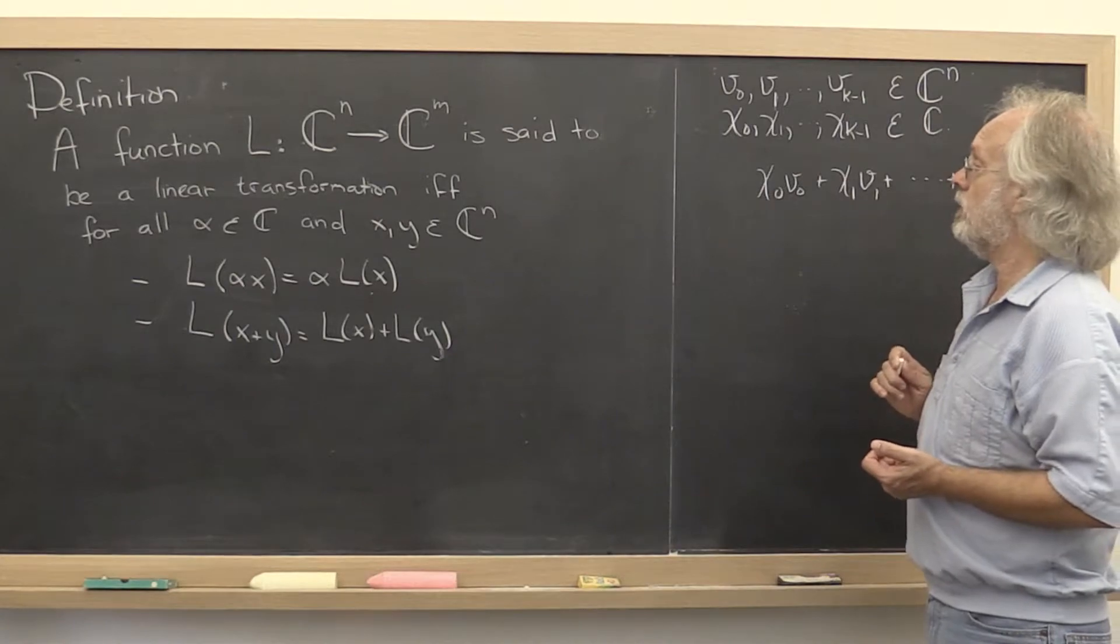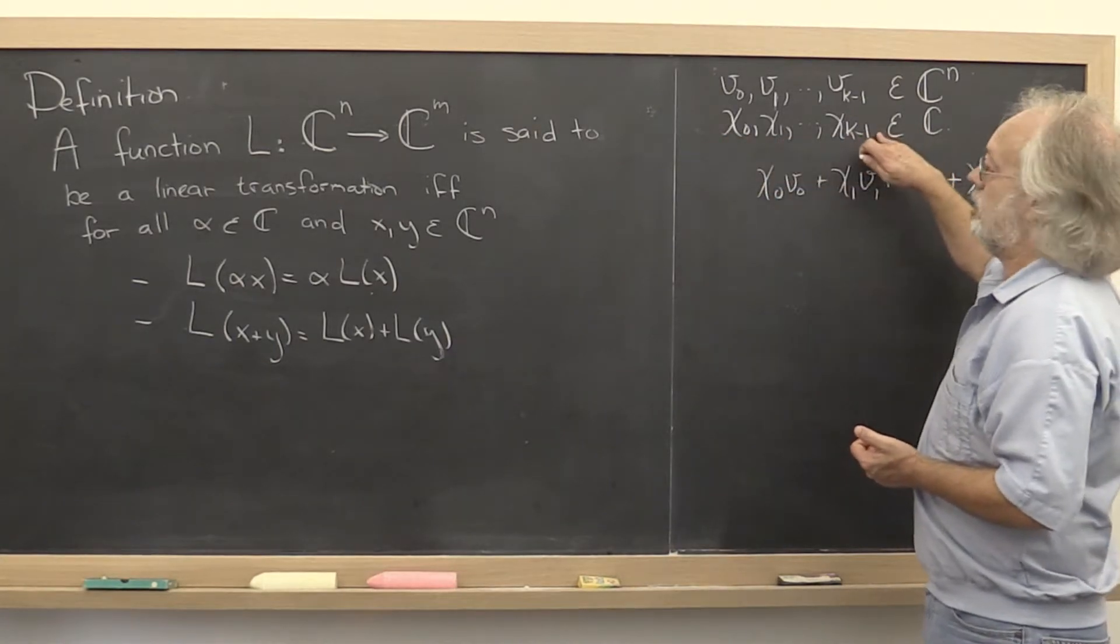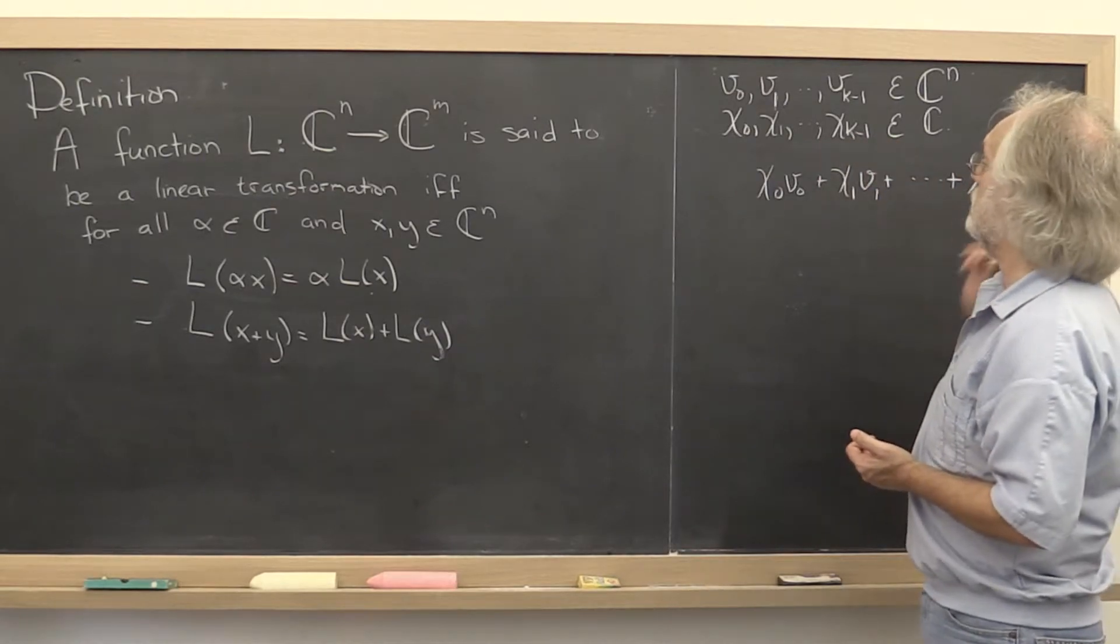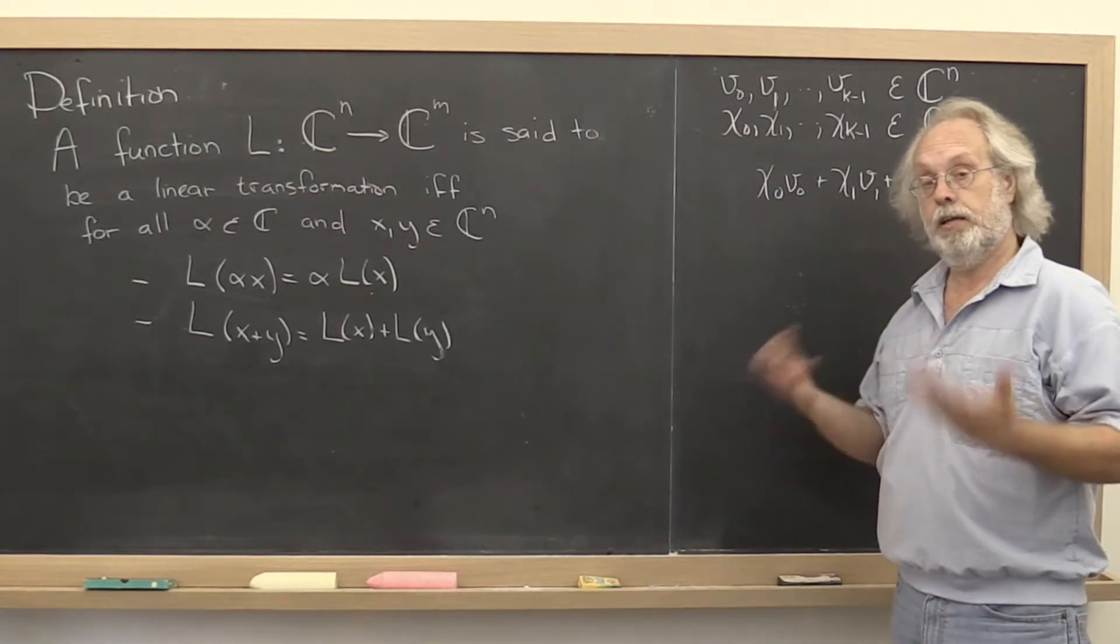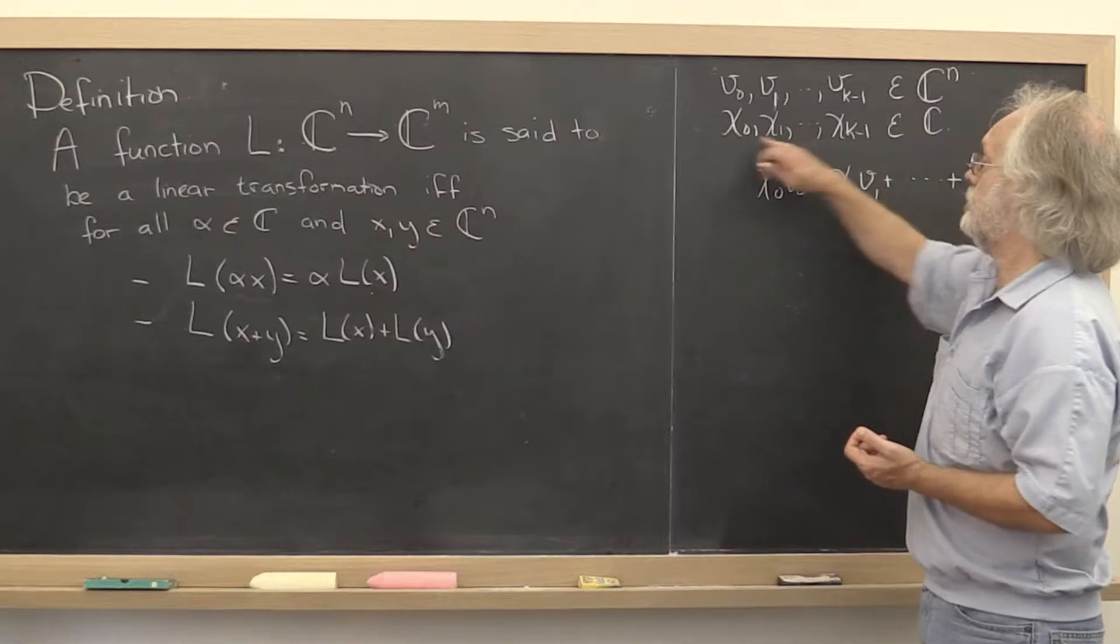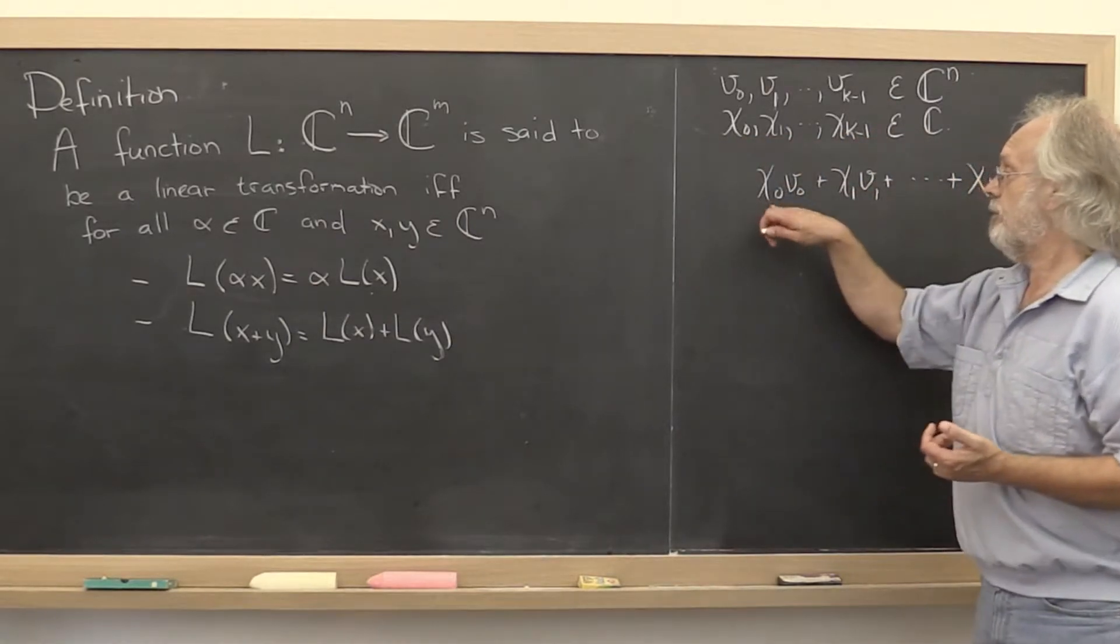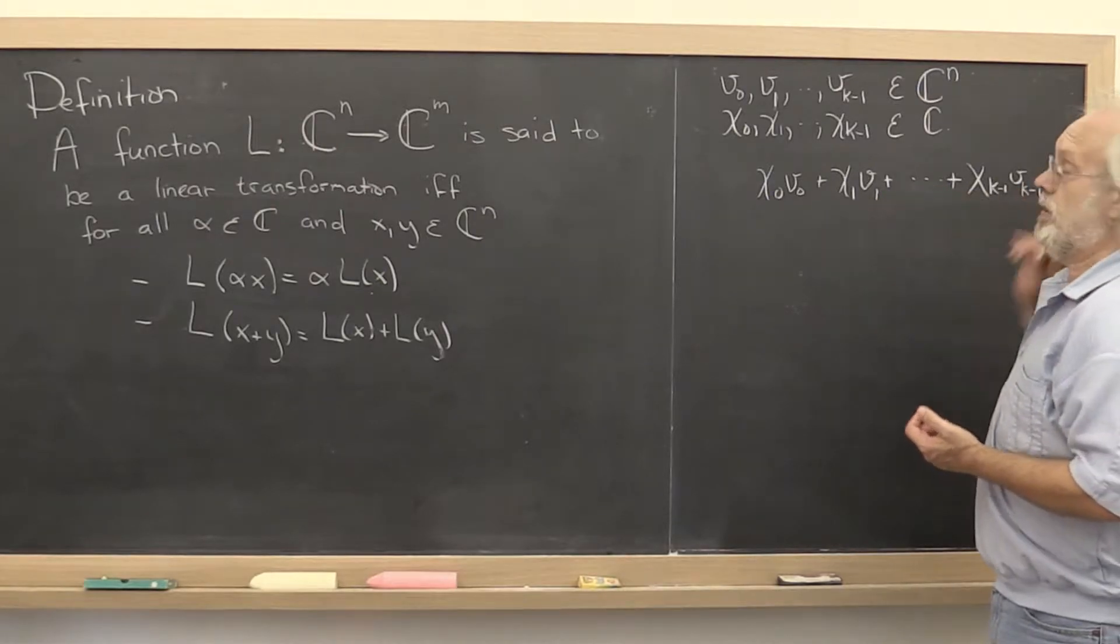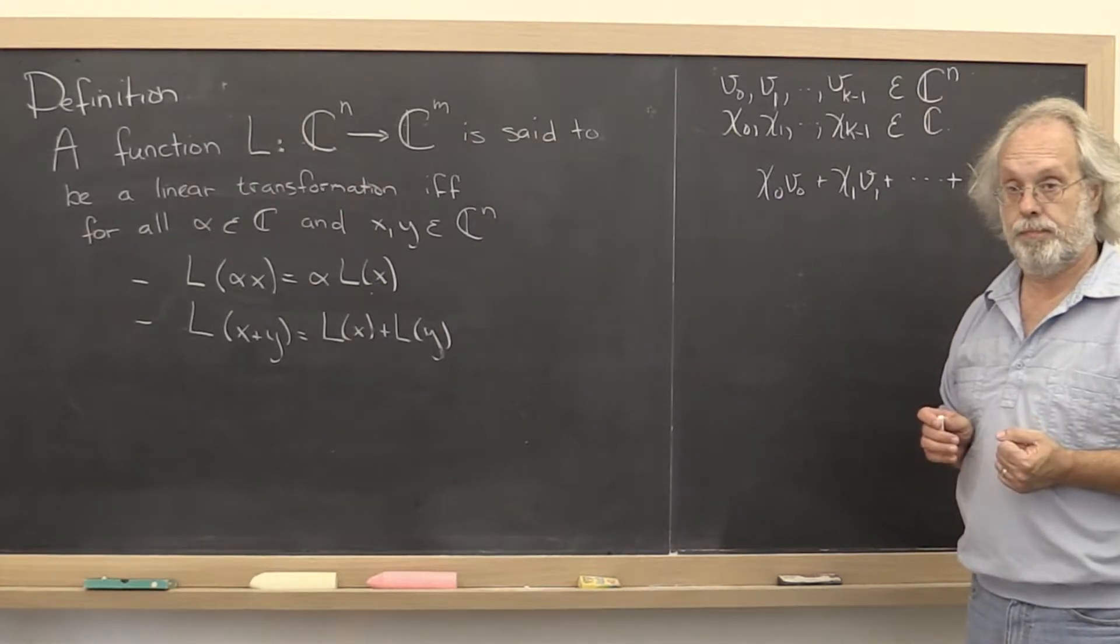and we're given a bunch of scalars, k of them, χ0 through χk minus 1, then the linear combination of these vectors using these scalars is given by χ0 times v0 plus χ1 times v1 and so forth.